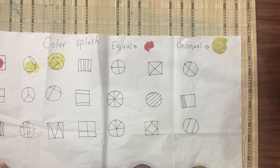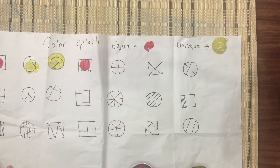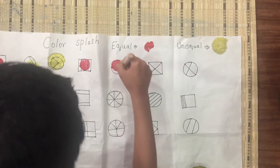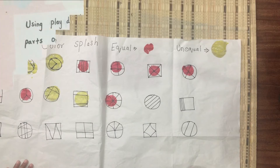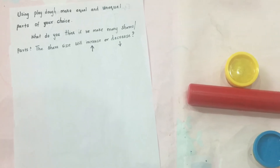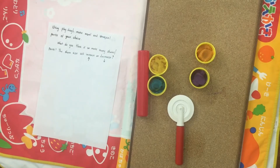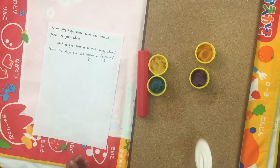This is equal size, and this one is also equal. This is again a fun activity where he needs to make equal and unequal parts using play-doh. In this activity, you show what is equal and unequal with play-doh.